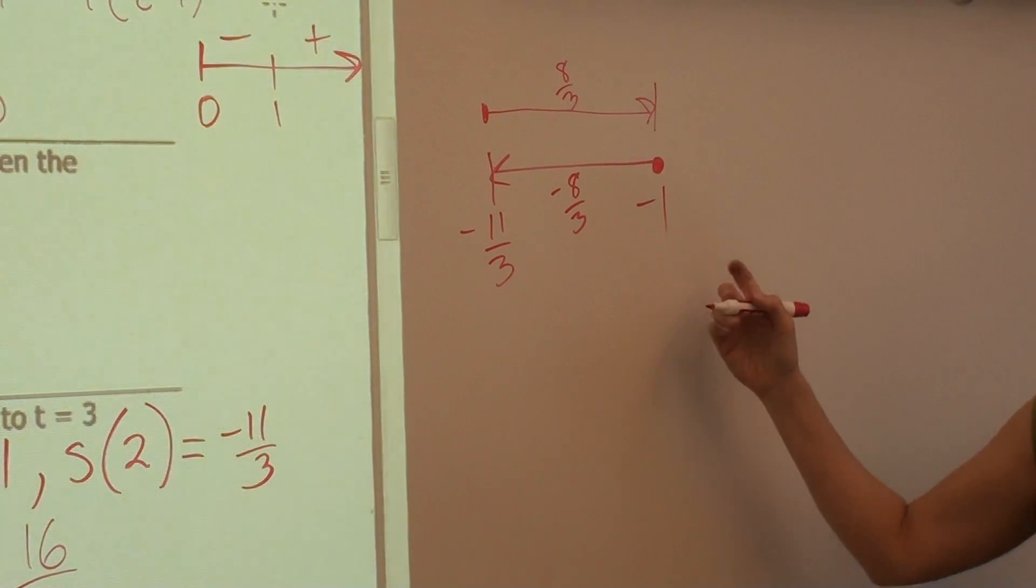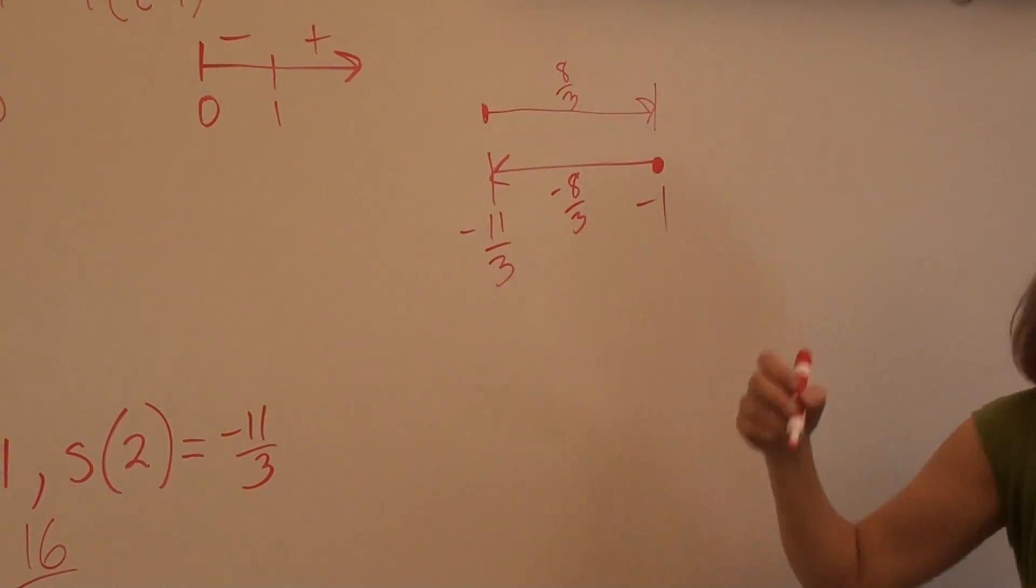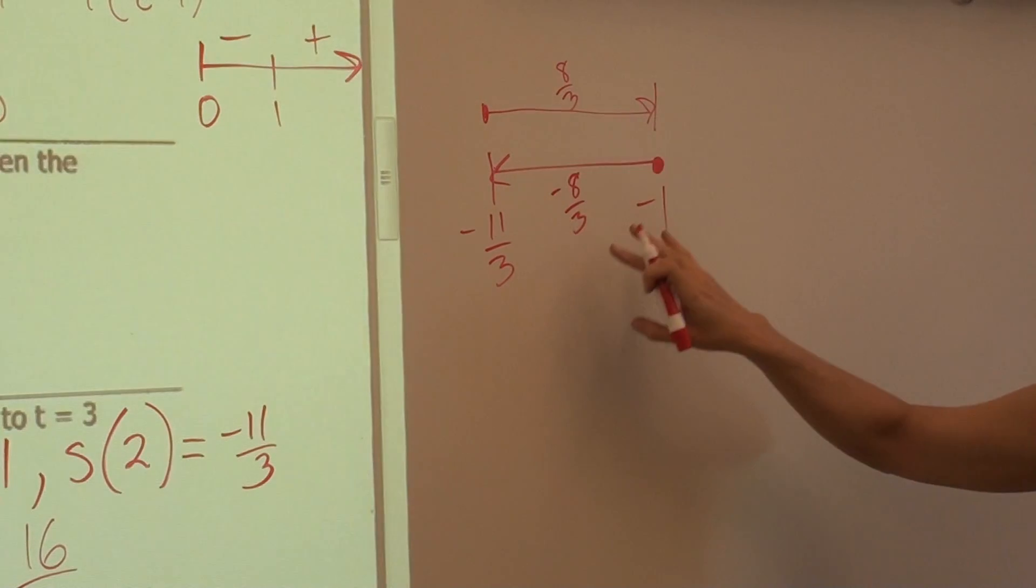So I like to draw a little diagram. I started here, I went this far this way. Then I turned around and went back that same distance, and then I figure out how far did I go in each direction.